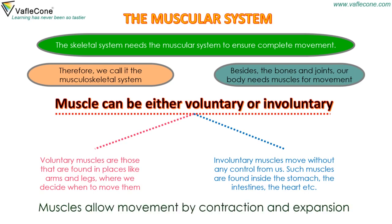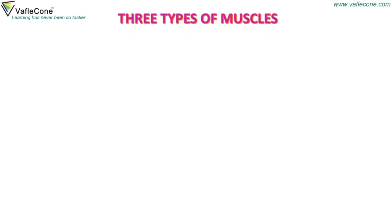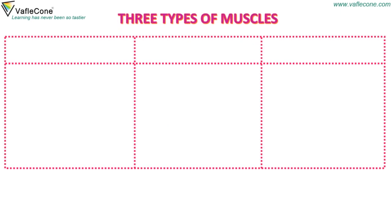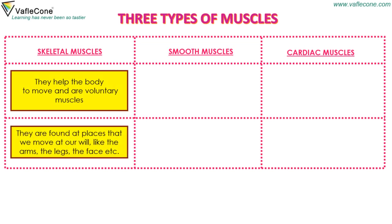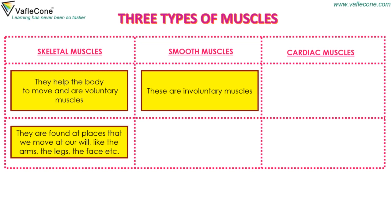Muscles allow movement by contraction and expansion. There are three types of muscles: skeletal muscles, smooth muscles, and cardiac muscles. Skeletal muscles help the body to move and are voluntary muscles. They are found at places we move at our will, like the arms, the legs, and the face.